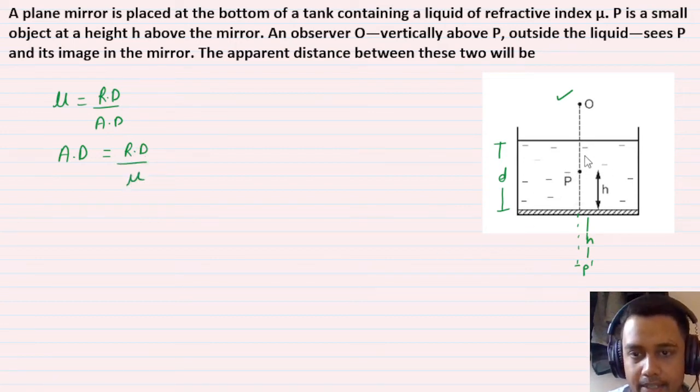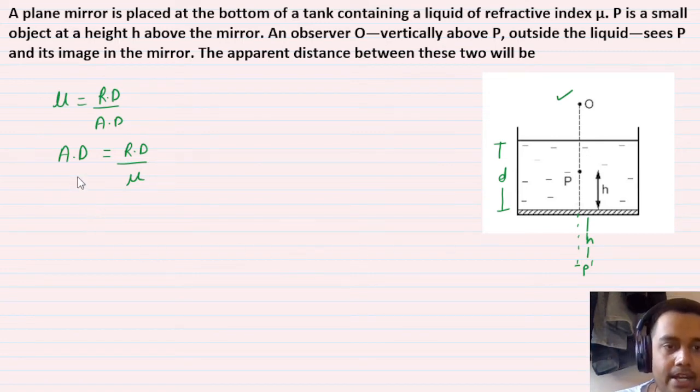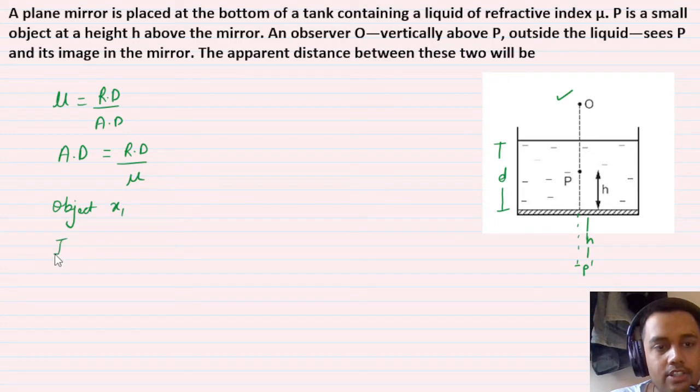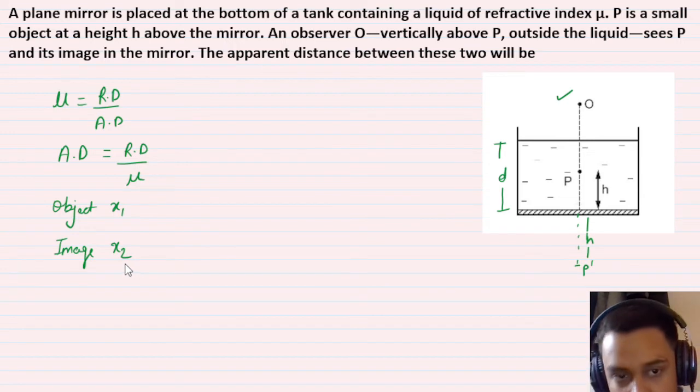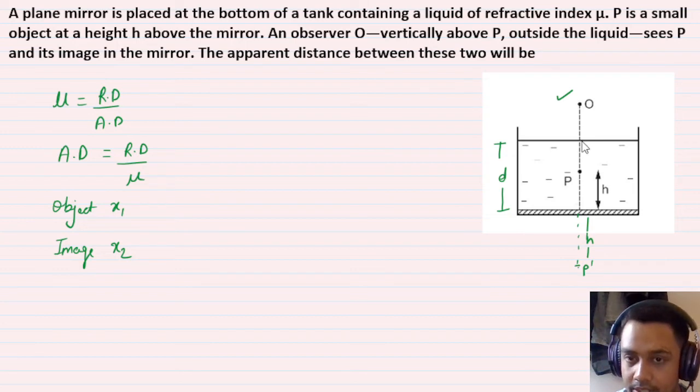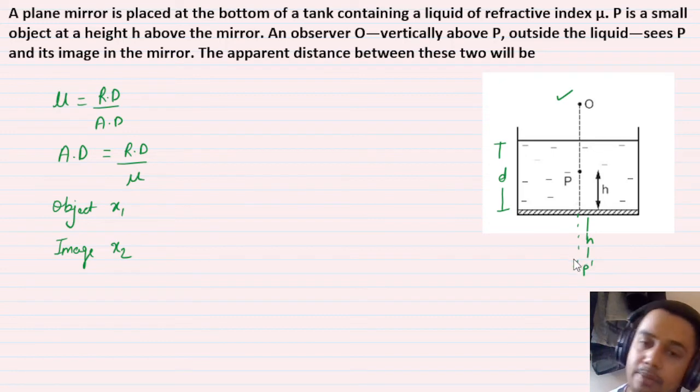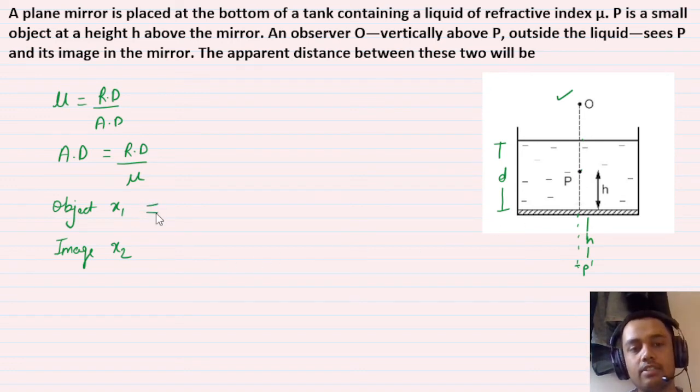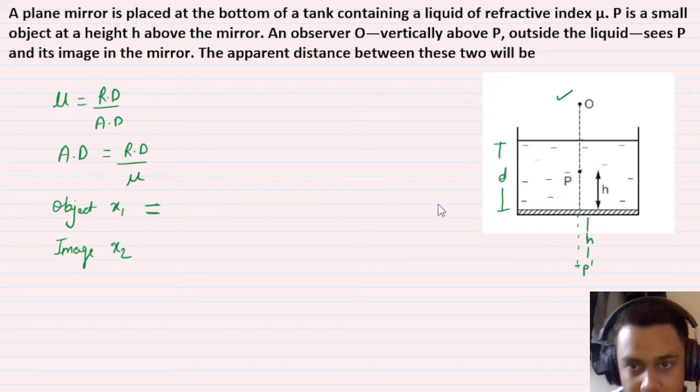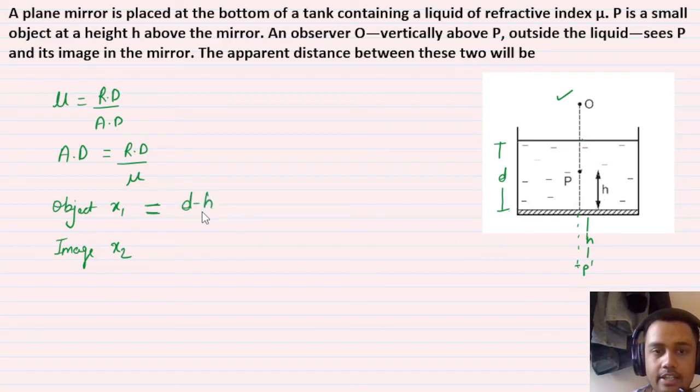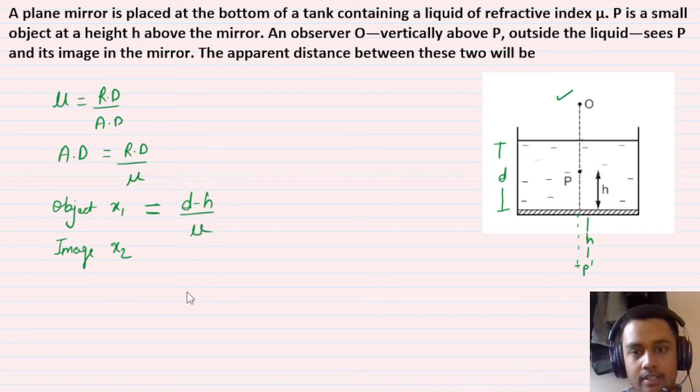Let the apparent depth of object P be x1. For the object, the apparent depth formula gives: x1 = real depth/μ. The liquid depth is D and the object is at height h, so the real depth is D minus h. Therefore x1 = (D-H)/μ.